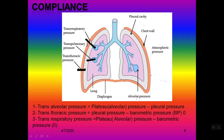Trans-respiratory pressure is airway pressure or alveolar pressure minus atmospheric pressure during inspiration, and the same measurement during expiration. When we come to trans-pulmonary or trans-alveolar pressure, this is alveolar pressure minus esophageal pressure — measured during inspiration minus during expiration. This is what we call trans-alveolar or trans-pulmonary pressure.